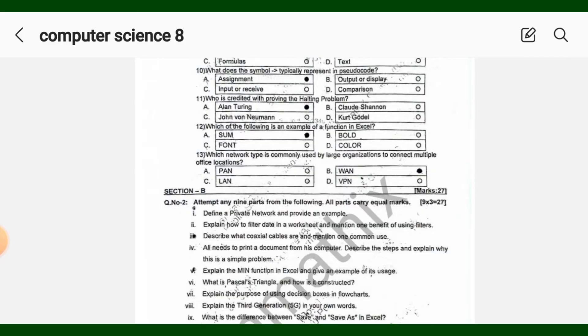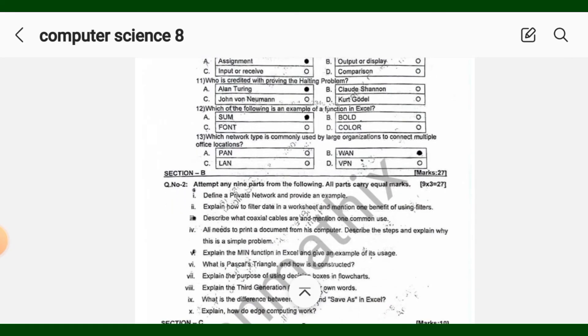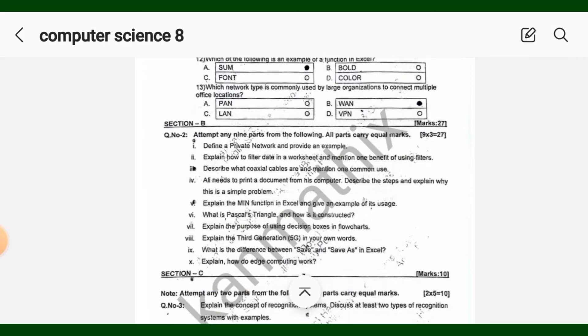So this was your objective portion and your subjective portion was Section B. Total marks are 27. Attempt any 9 parts from the following. All parts carry equal marks.